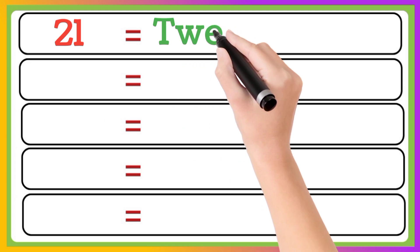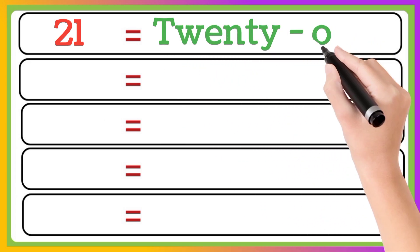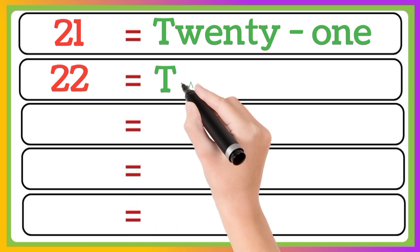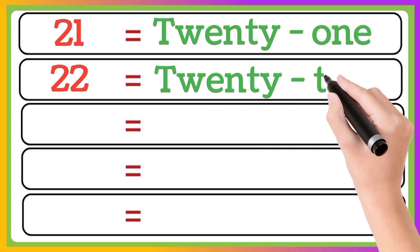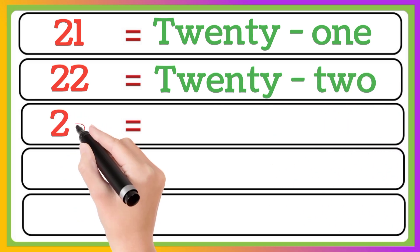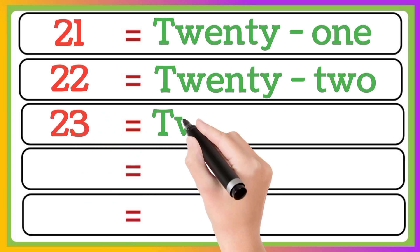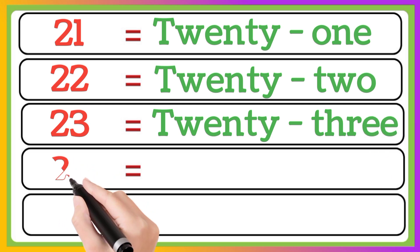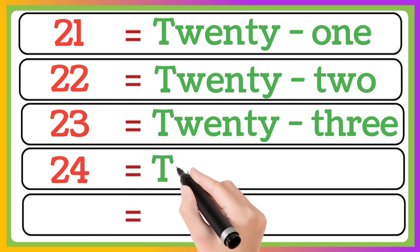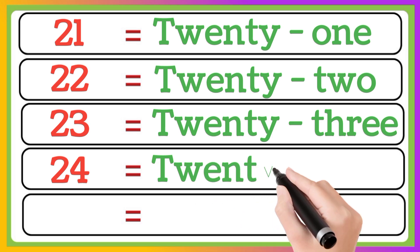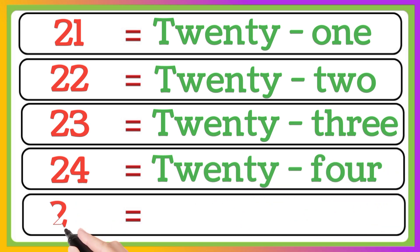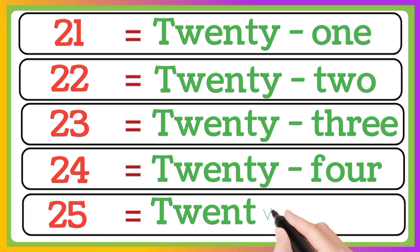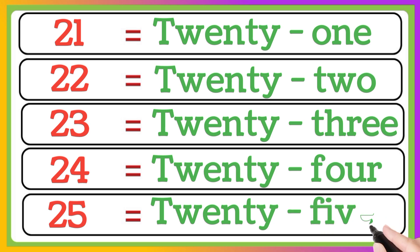21. T-W-E-N-T-Y-O-N-E. 22. T-W-E-N-T-Y-T-W-O. 23. T-W-E-N-T-Y-T-H-R-E-E. 24. T-W-E-N-T-Y-F-O-U-R. 25. T-W-E-N-T-Y-F-I-V-E.